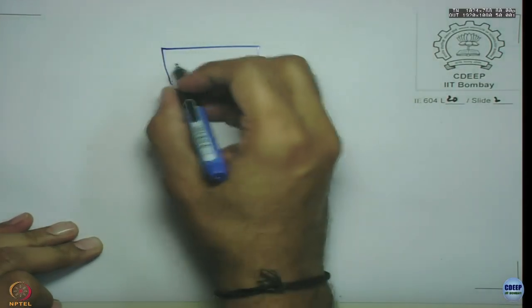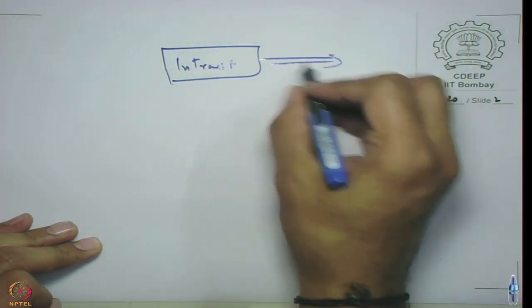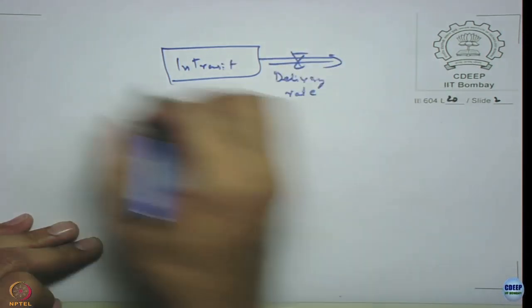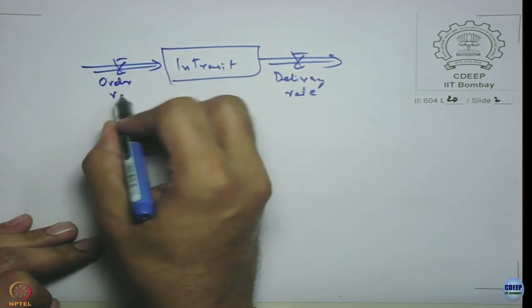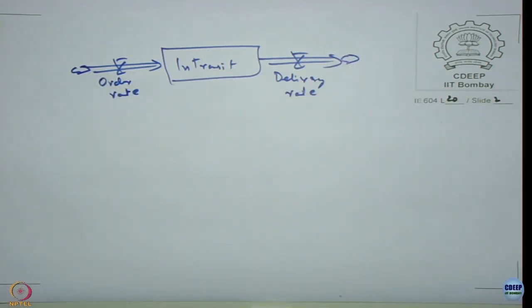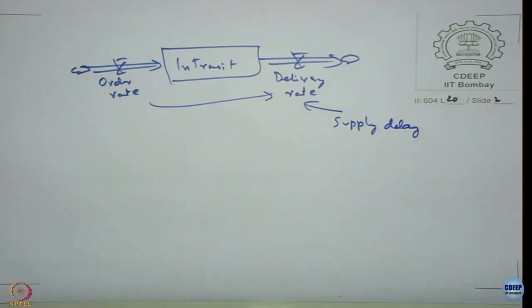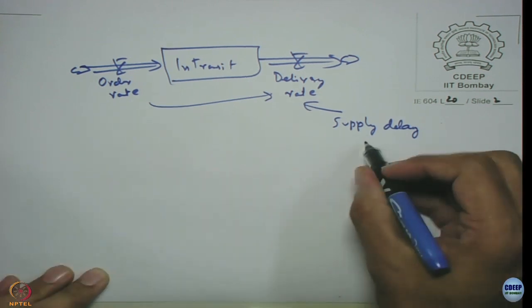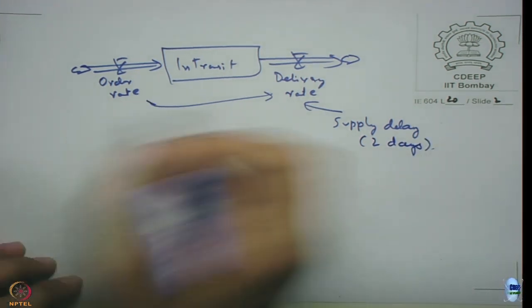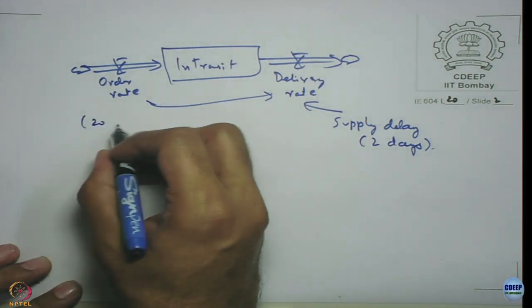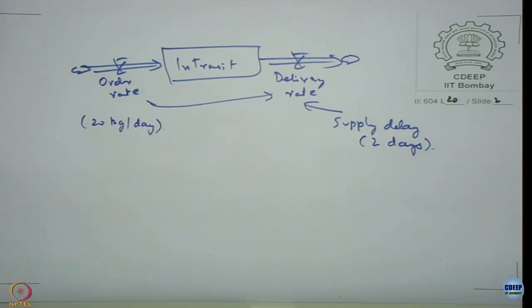Sales rate is 1. There is no sales rate here — there is some sort of a supply delay. In steady state, order rate equals delivery rate, so it does not matter whether I am looking at order rate or delivery rate. Suppose I know the delivery delay is two days and I am ordering 20 kg per day — how much should be in transit in steady state?